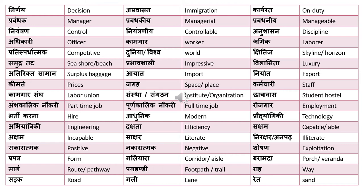'Chhatra vas' is student hostel — in Hindi, a student is called 'chhatra,' and the place where a student lives is 'chhatra vas,' since 'avas' means house. 'Anshkalik naukri' means part-time job, which comes up in many dialogues — for example, 'I am having a part-time job to fund my expenses in Australia.' 'Poornakalik naukri' is full-time job. 'Rozgar' means employment, and 'bharti karna' means to hire or to employ.